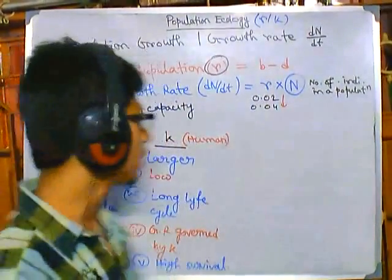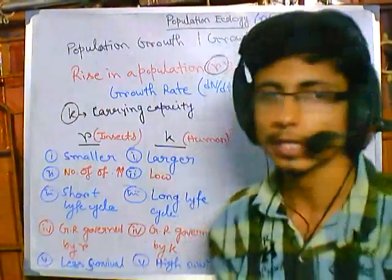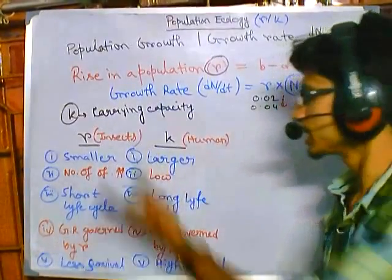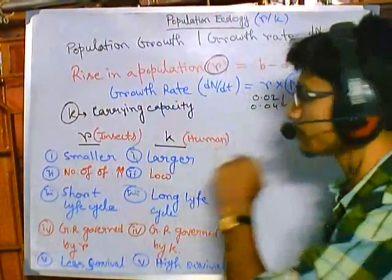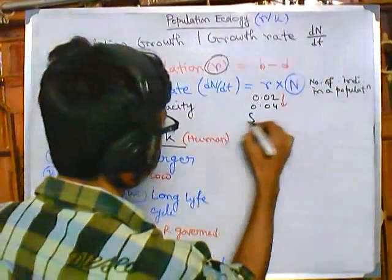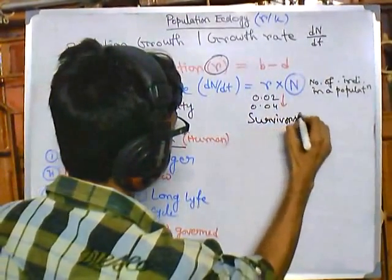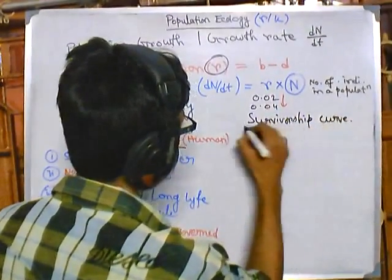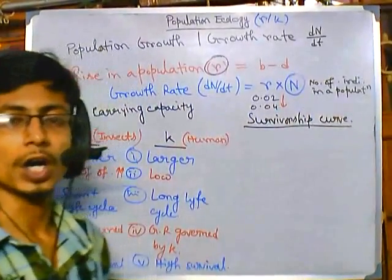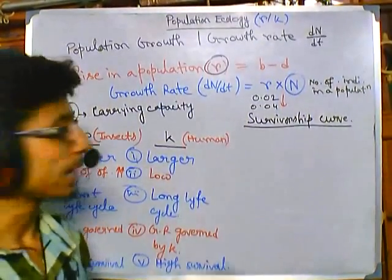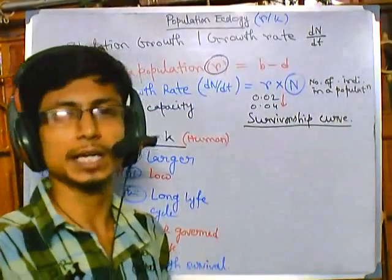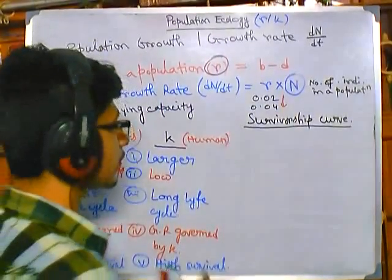We have just talked about R and K selected species. R selected species examples include insects, honeybee, and frogs. K selected species example is humans. Now we'll be talking about survivorship curves. This kind of survivorship curve can give us a clear understanding of the growth pattern of R and K selected species, and by looking at it we can tell whether a species is R selected or K selected.